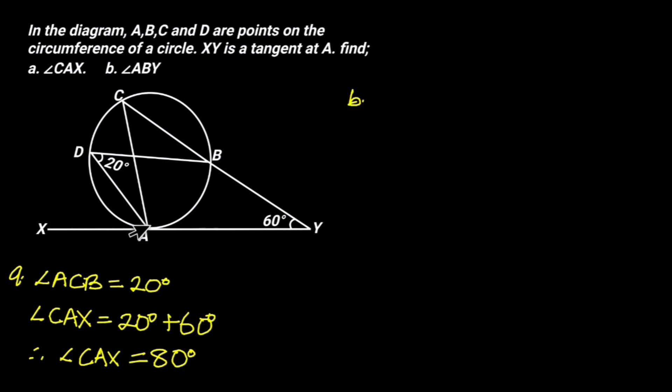Solution B. Drawing a line from A to B will give a clearer view of angle ABY. Hence, angle CBA is equal to angle CAX, which is equal to 80 degrees.